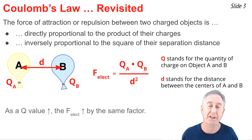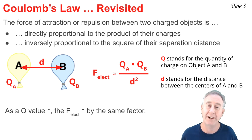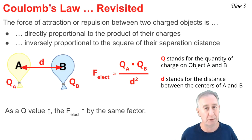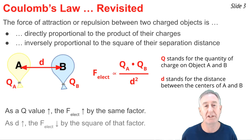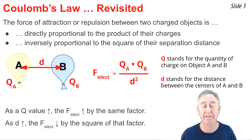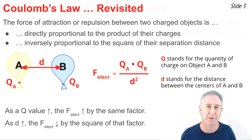The law states that as you increase the quantity of charge on either one of the objects, you would increase the force between them by the same factor by which you increase the charge. And if you were to increase the distance between the two objects, you would decrease the electric force between them by the square of the factor by which the distance was changed.